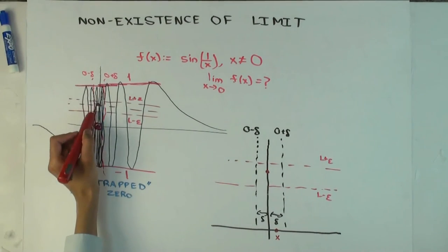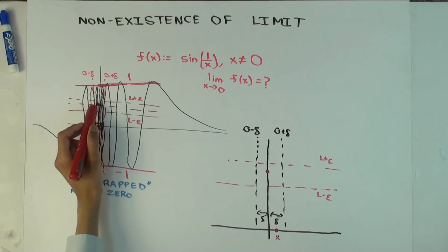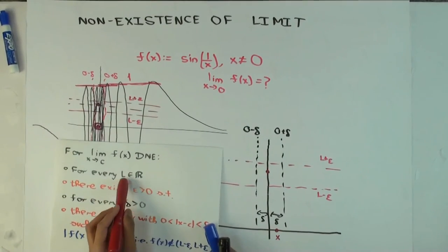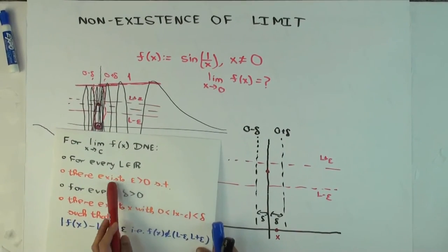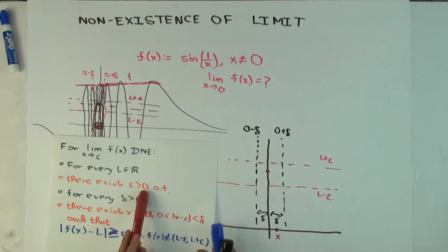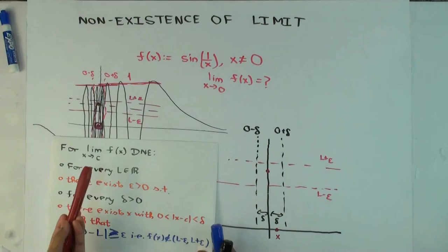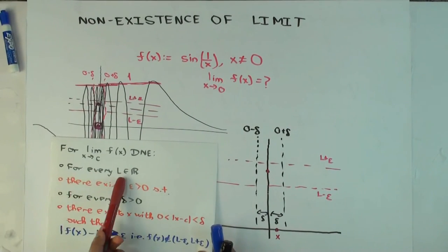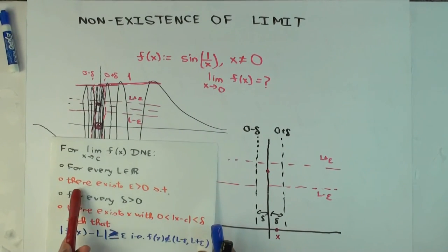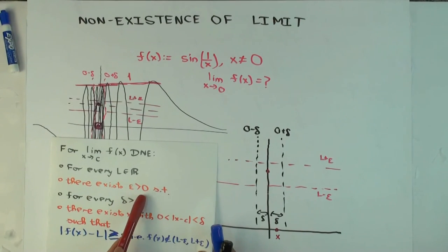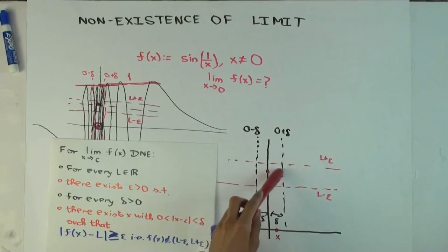Looking back at this function: can the prover pick an L such that, regardless of the epsilon the skeptic picks, there exists a delta such that for all x the function is trapped? Or is it instead true that the skeptic will win — that whatever L the prover picks, there exists an epsilon such that whatever delta the prover picks, the function is not, in fact, trapped?